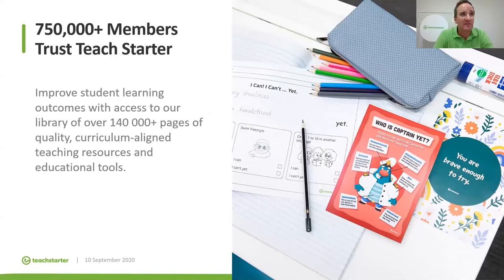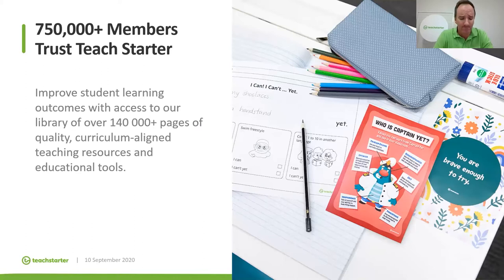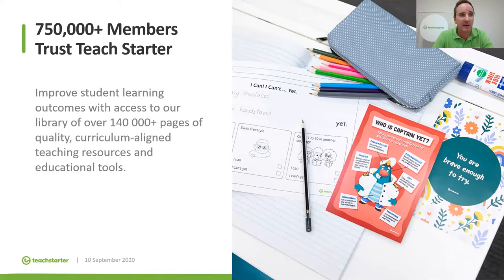We have over 750,000 members all over the world — in around 197 countries — which gives us an idea of how far-reaching our resources are. Most members are in Australia given our Australian curriculum alignment, but we also have an office in the US, make resources aligned to the UK curriculum as well, which is popular with teachers in international schools. Our resources have improved student learning outcomes, and 750,000-plus members would probably say the same.